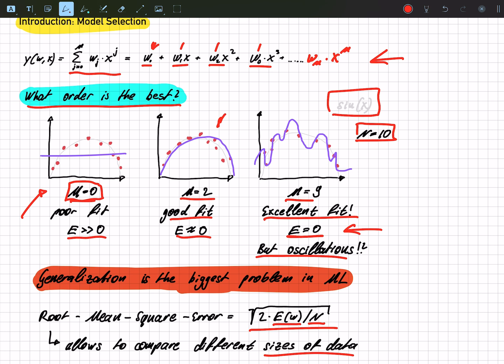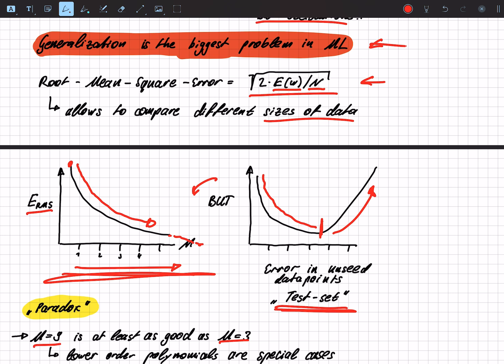But we also see that if we have a test set, at a certain point our error explodes and basically goes through infinity when we choose points that we did not see during our training.